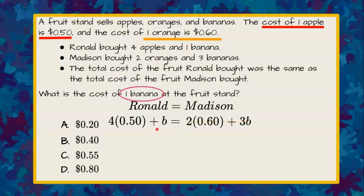Now we have our equation and we need to solve for b, the cost of one banana. Let's multiply: four times 50 cents is $2.00 plus b, and two times 60 cents is $1.20 plus 3b.